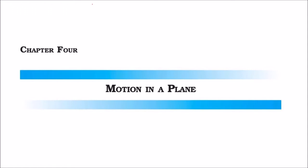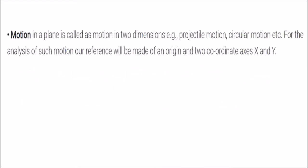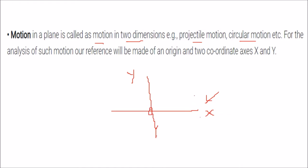We are discussing Chapter 4, which is motion in a plane. Motion in a plane is called motion in two dimensions. If you take x and y axes, then the motion defined on this plane — like projectile motion and circular motion — can be analyzed with this reference. Taking an origin and two coordinate axes, we call this motion in a plane.